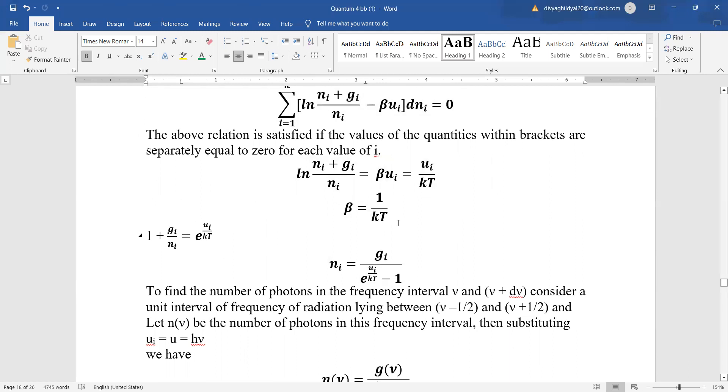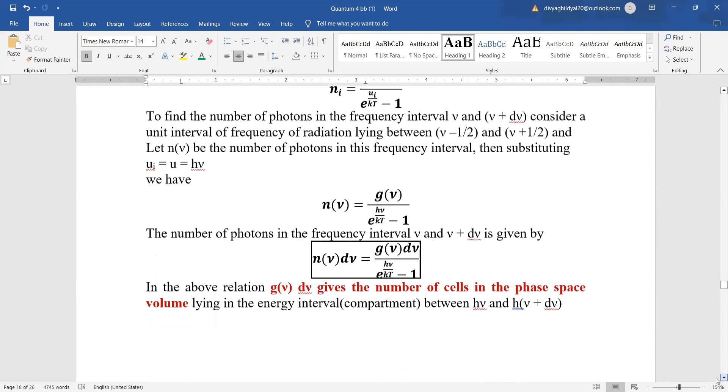Putting this value in ni we get ni equals gi upon e to the power of (ui upon kT) minus 1. This way n for frequency gives us g(nu) upon e to the power of (h mu by kT) minus 1. So the number of photons in the frequency interval mu and mu plus d mu is given by n mu d mu equals g mu upon e to the power of (h mu by kT) minus 1.